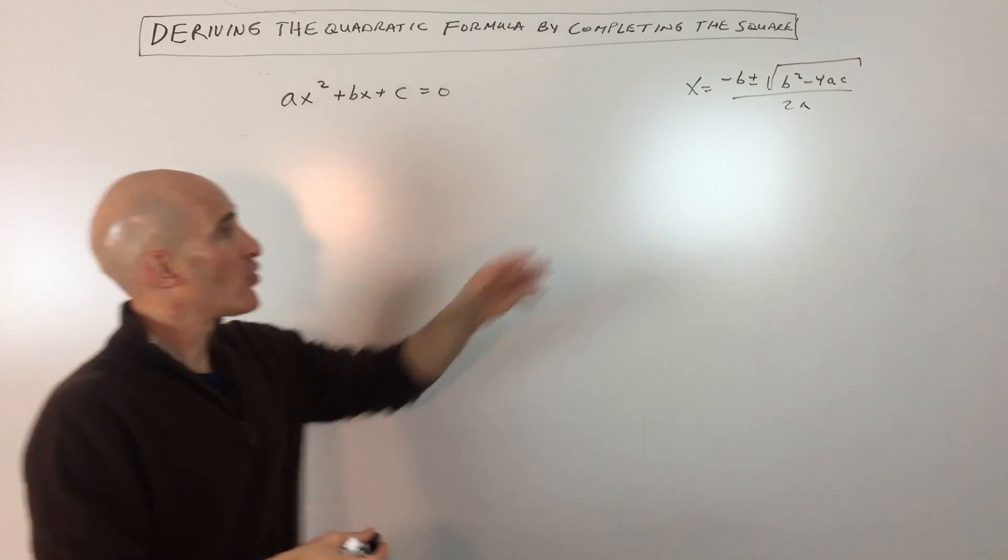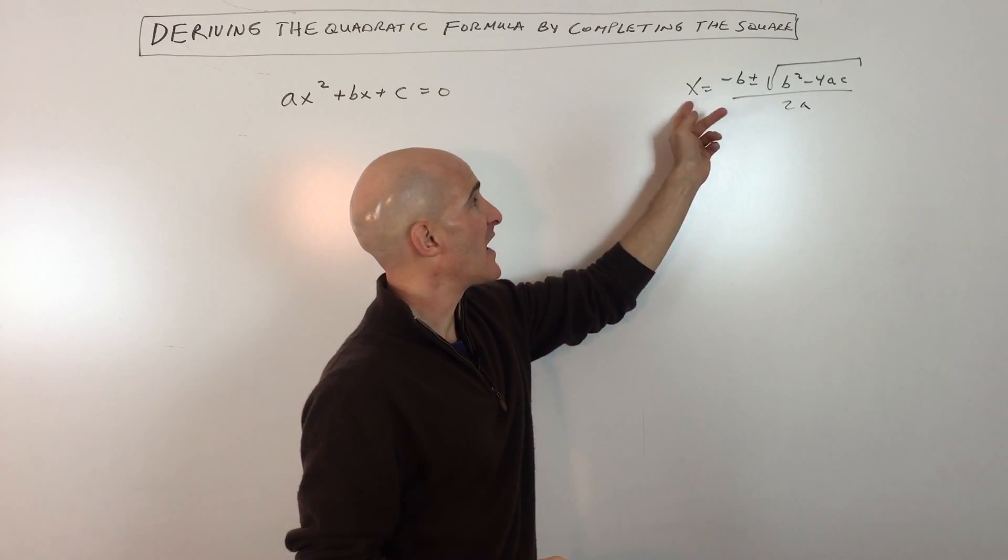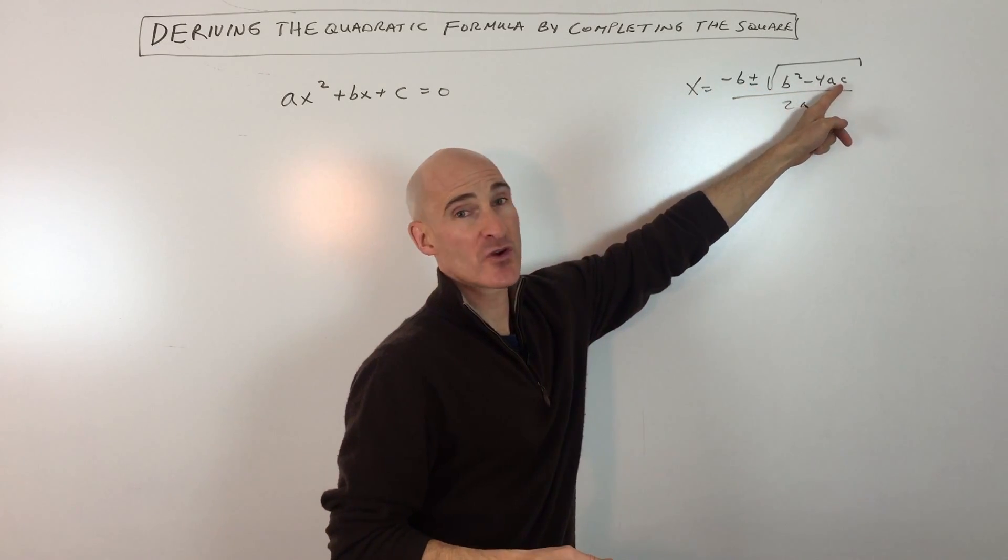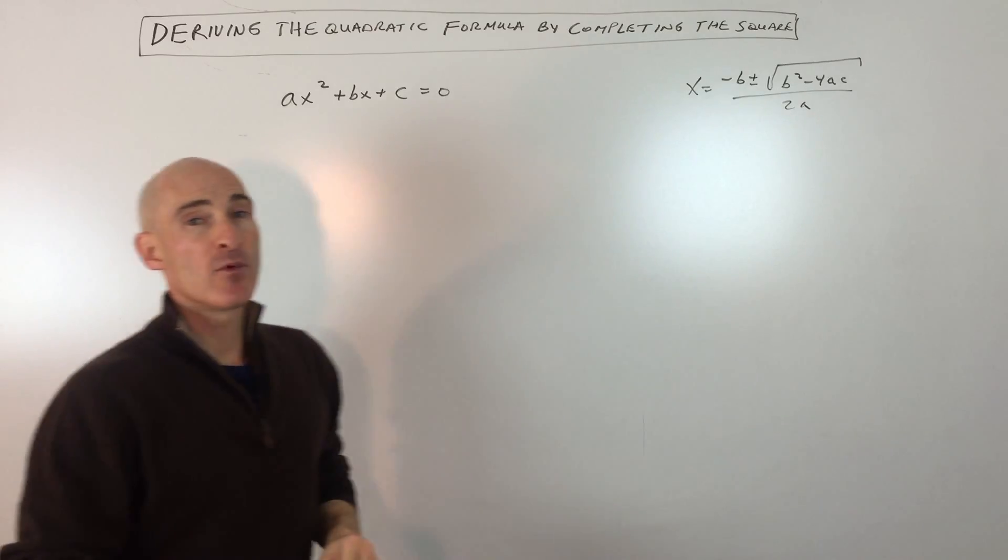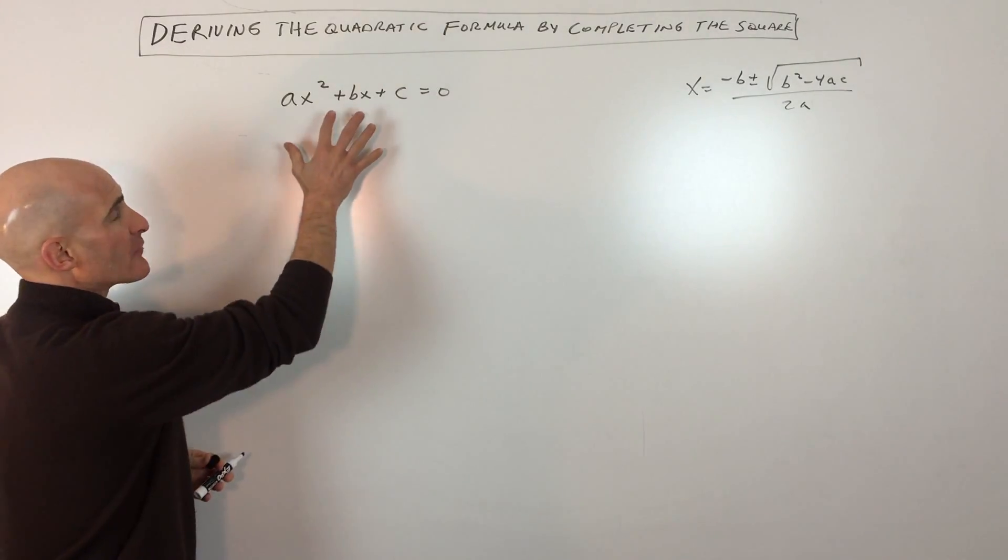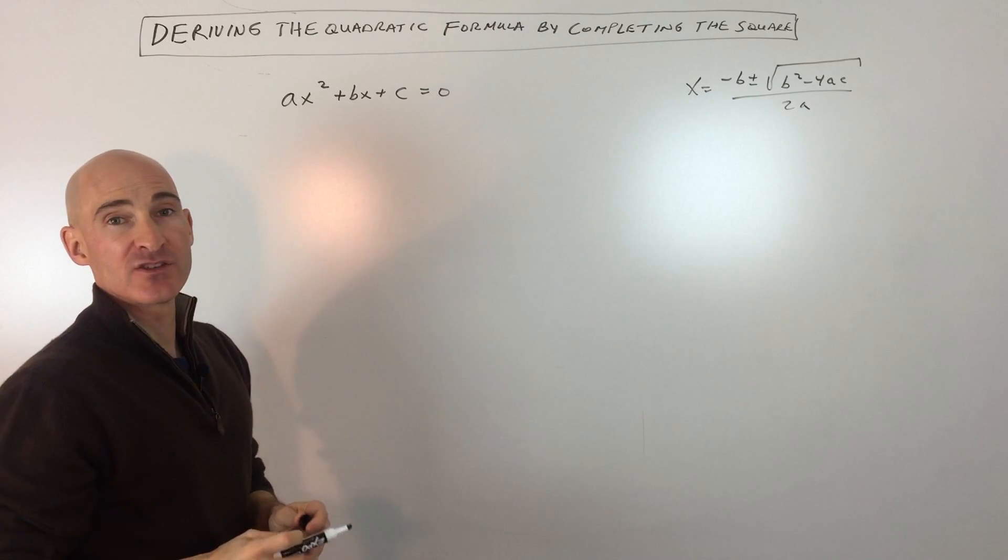And normally what we would do is just go ahead and use our quadratic formula here. You can see x equals negative b plus or minus the square root of b squared minus 4ac all over 2a. But what we're going to do is show you how you can get from this equation to this equation by completing the square.